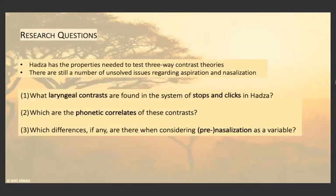Hatsa has the properties needed to test three-way contrast theories, and there are still a number of unresolved or problematic issues regarding aspiration and nasalization. The research questions of my paper are: what laryngeal contrasts are actually found in the system of stops and clicks in Hatsa; which are the phonetic correlates of these contrasts; and which differences, if any, are there when considering pre-nasalization as a variable.